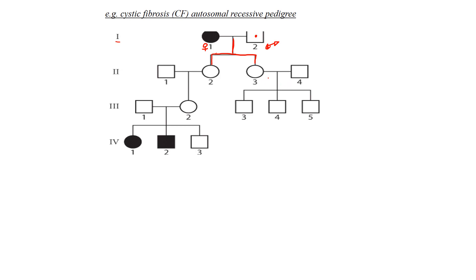Review page 54 — this material will be provided in your data booklet for your final exam, so you don't need to memorize it, but after doing these many times you'll be familiar with the main pedigree symbols. This pedigree is for cystic fibrosis, which is autosomal, so we will not use X's and Y's in our notation — we'll use letters — and it is recessive.